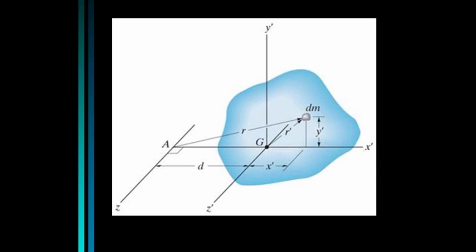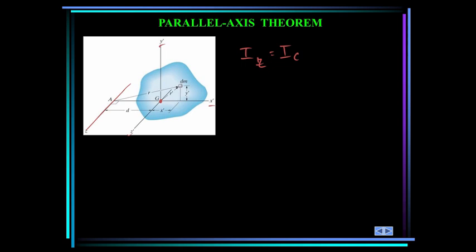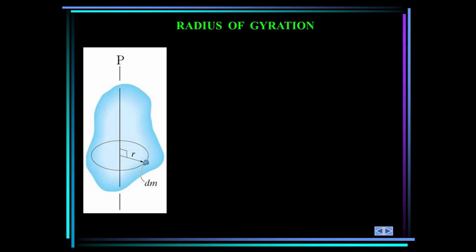Now we'll discuss the parallel axis theorem. Here you see a rigid body in blue, and the mass center is denoted by point G, with axes x prime, y prime, z prime passing through the center of gravity. The moment of inertia about the z axis is equal to the moment of inertia about the center of gravity in the z direction, plus the mass times distance squared. D is the perpendicular distance between the parallel axis z prime and z. This is a way to transfer the moment of inertia from one axis to another. Remember, the axes have to be parallel to each other for this to work.